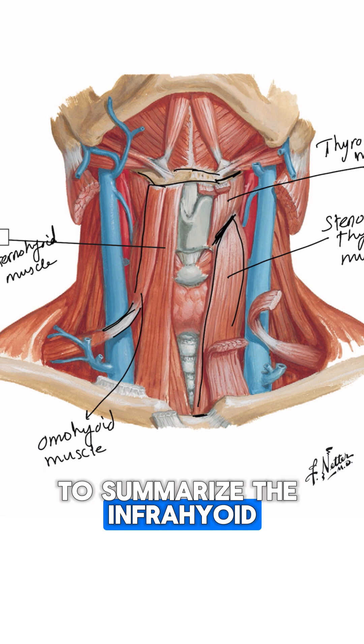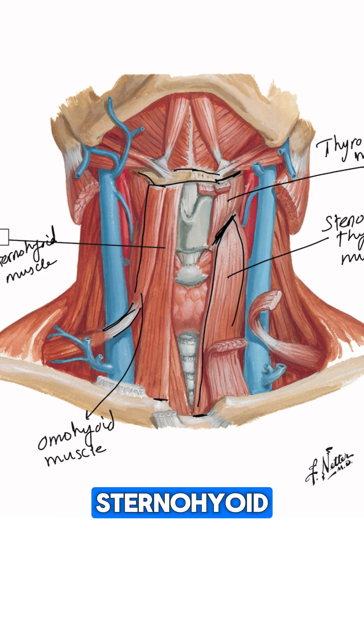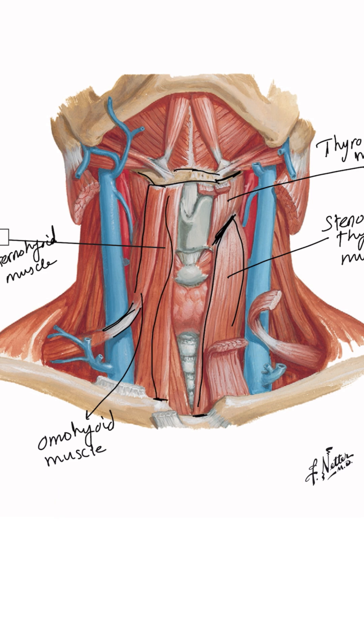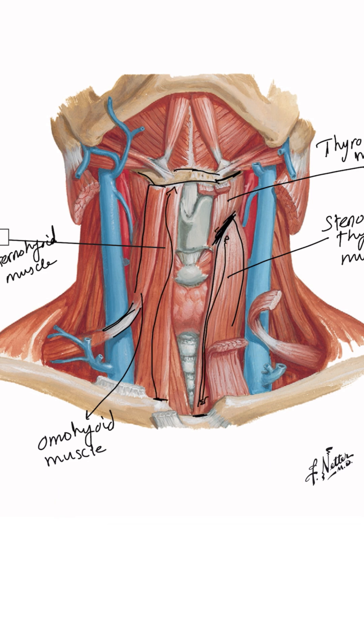To summarize the infrahyoid muscles, you have the sternohyoid, sternothyroid, thyrohyoid, and omohyoid muscle.